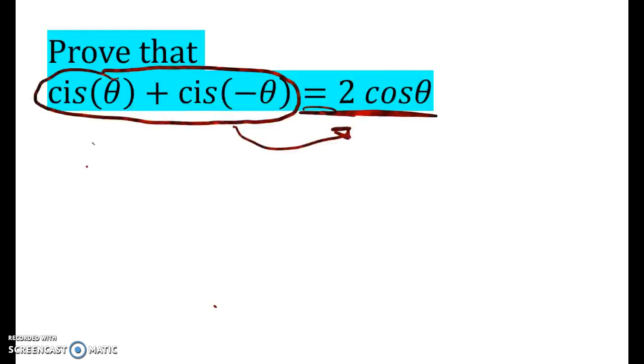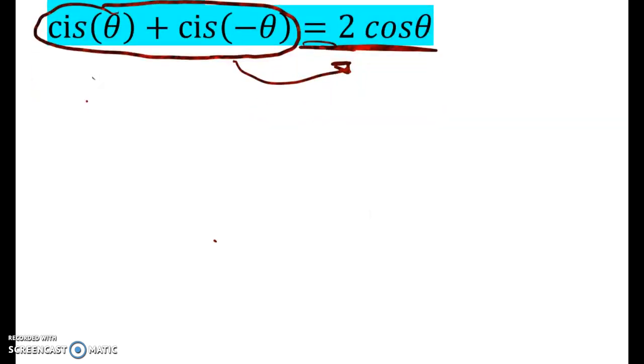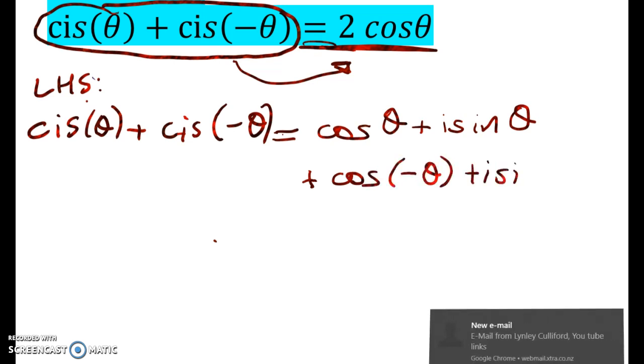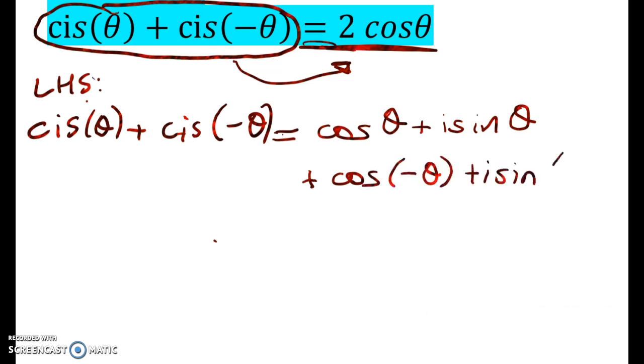Okay, so let's do the proof of this one. So we'll start, as usual, by writing out the left-hand side. So cis theta plus cis of negative theta is equal to, all I'm going to do is expand out cis into cos theta plus i sine theta plus cos of negative theta plus i sine of negative theta.